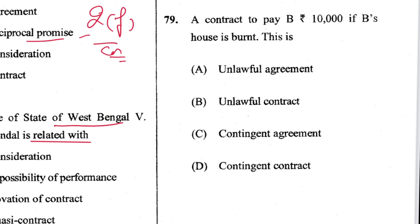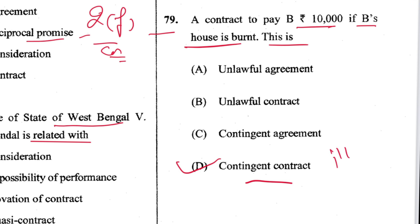Question 79: A contract to pay rupees 10,000 if B's house is burnt — this is a contingent contract. D is the answer. This is an illustration in Section 31 of the Contract Act.